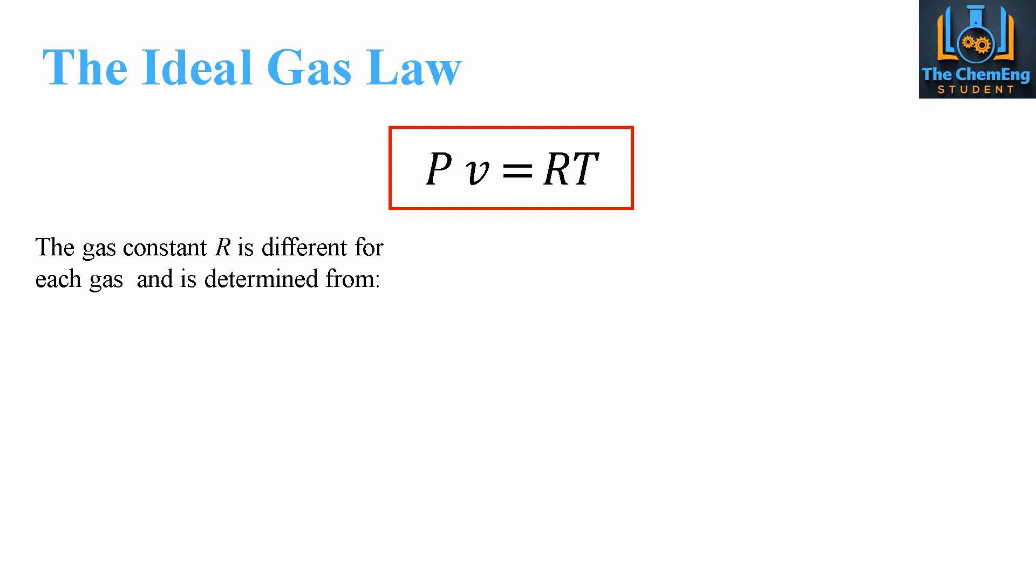So the ideal gas law is given by this equation here, where we have PV equals RT. Now we'll go through all the different parameters and then we'll look at the equations of state for the ideal gas law.